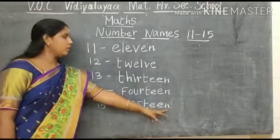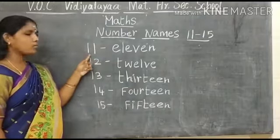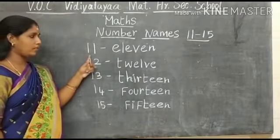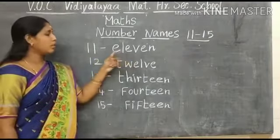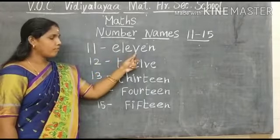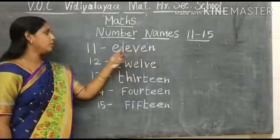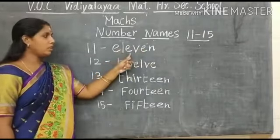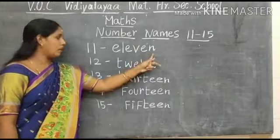Children, one second, I am going to revise this. What number is this? Number 11. This is number 11. What is the spelling of 11? E, L, E, V, E, N. 11. E, L, E, V, E, N. 11.